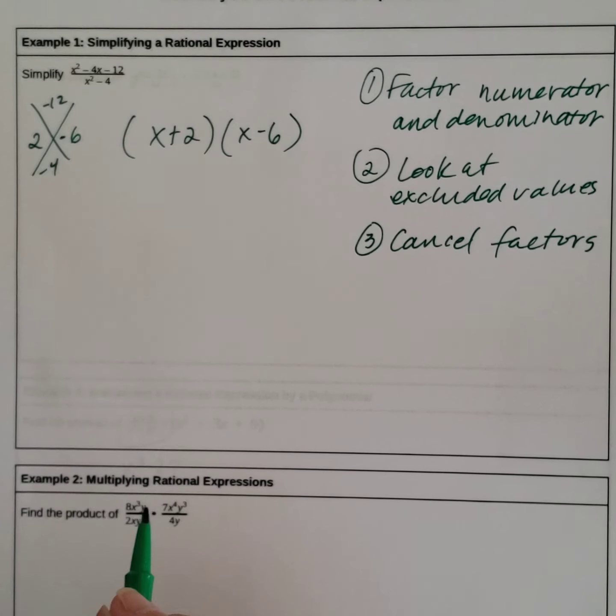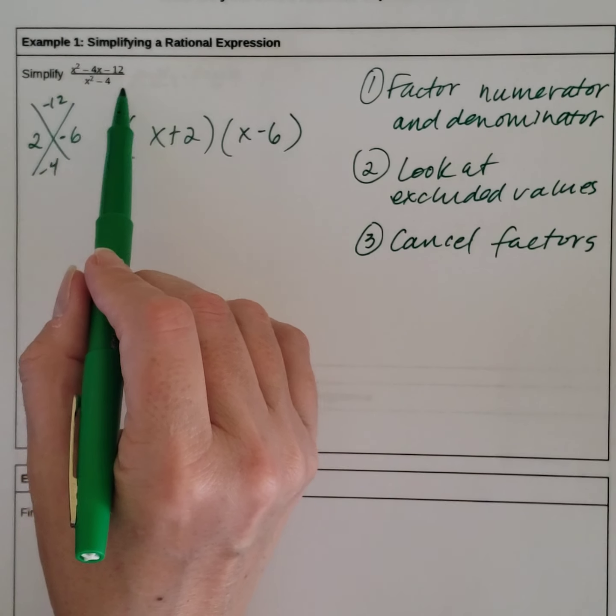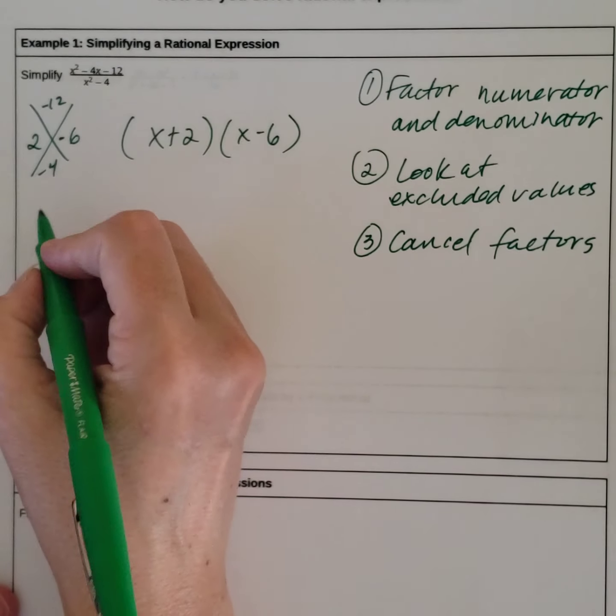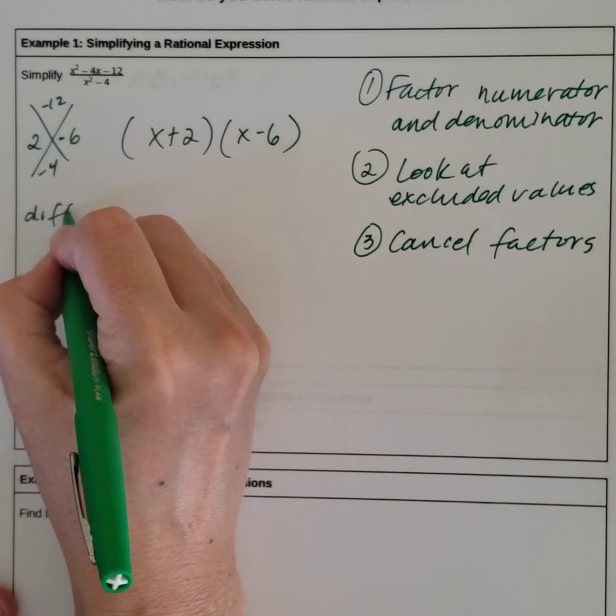The bottom, we have x squared minus 4. So we have two terms. Does it look like a difference of squares or difference of cubes? It's raised to the second power, so we're going to think that's probably a difference of squares. We can take the square root of x squared and the square root of 4. So this is difference of squares on the bottom.